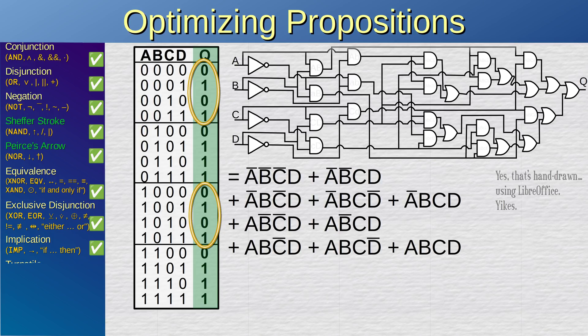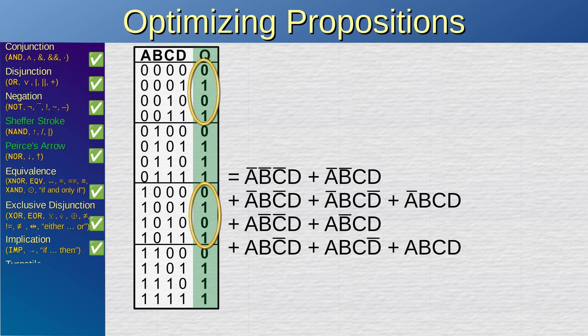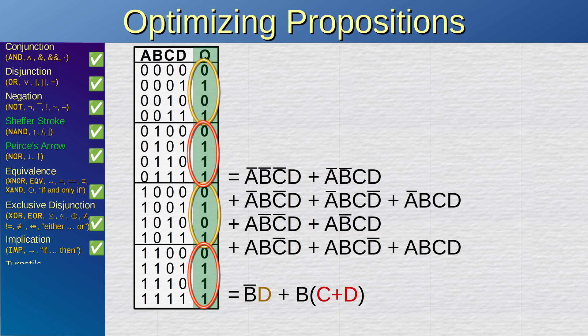We could notice some patterns in the truth table. For example, these two groups look identical — the result appears to be the value of d, and this is done when b is false. And these two other groups look identical: their result is the disjunction between c and d, and this is done when b is true. Is this the optimal result? No, it is not.